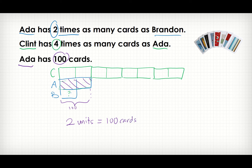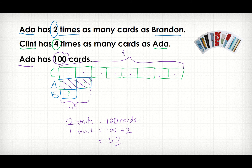One unit is simply 100 divided by 2, which is 50. But 50 is not the answer — 50 is the key to finding the answer for any question you may ask. For example, if the question asks how many cards does Clint have? Clint has eight units, so Clint will have eight times 50.